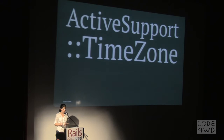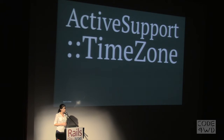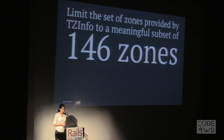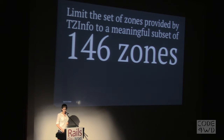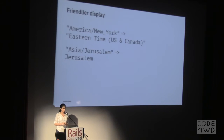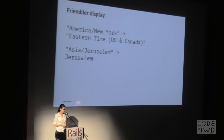In Rails, we have a module called ActiveSupport::TimeZone. It acts as a wrapper for the TZInfo library and limits the set of zones provided by TZInfo to a meaningful subset of 146 zones. It also displays all the zones in a much friendlier name — so instead of having America slash New York, we can just see Eastern Time, US and Canada, and the same for Jerusalem.